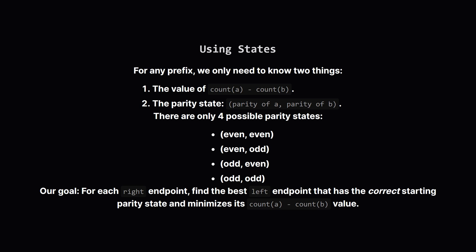This leads us to our main strategy. For any prefix ending at some position, all we really need to track are two things. First, the difference value we calculated, which is the count of A minus the count of B. And second, we need to know the parity of those two counts. There are only four possible parity combinations: even even, even odd, odd even, and odd odd. So here's the plan. We'll slide a right pointer across the string. For each position, we'll figure out its value and its parity state. Then, we'll look back at all the left positions we've seen, and find one that has the perfect starting parity state to give us a valid substring. And among those valid starting points, we want the one that makes our final score as large as possible.